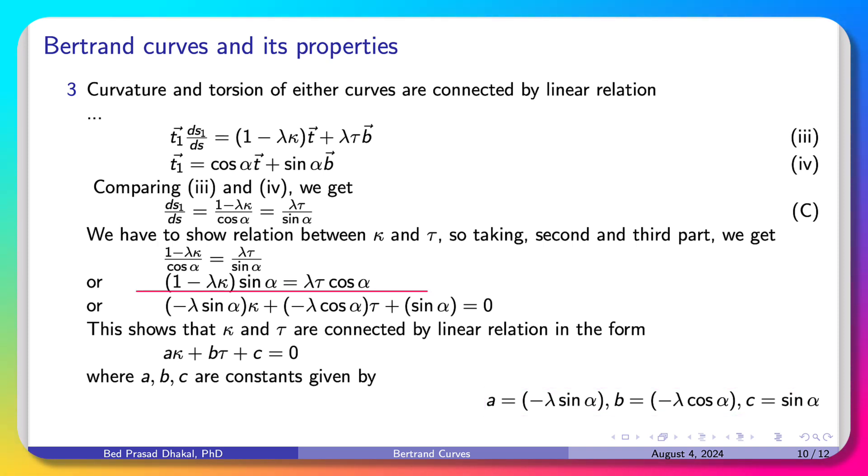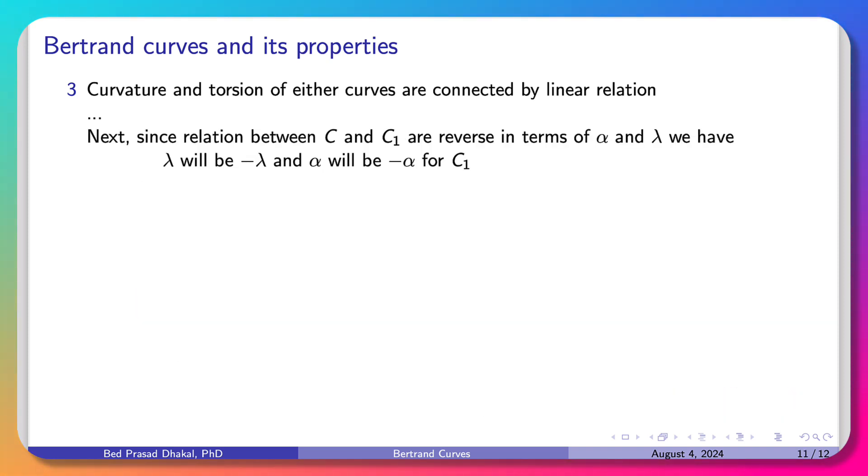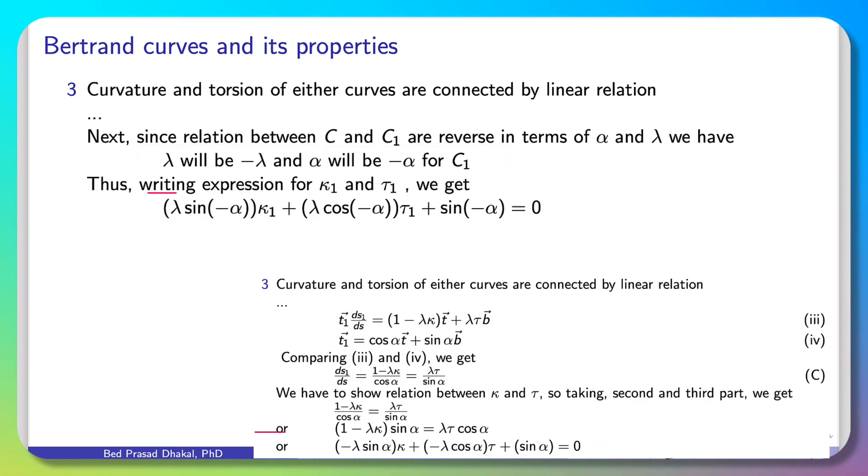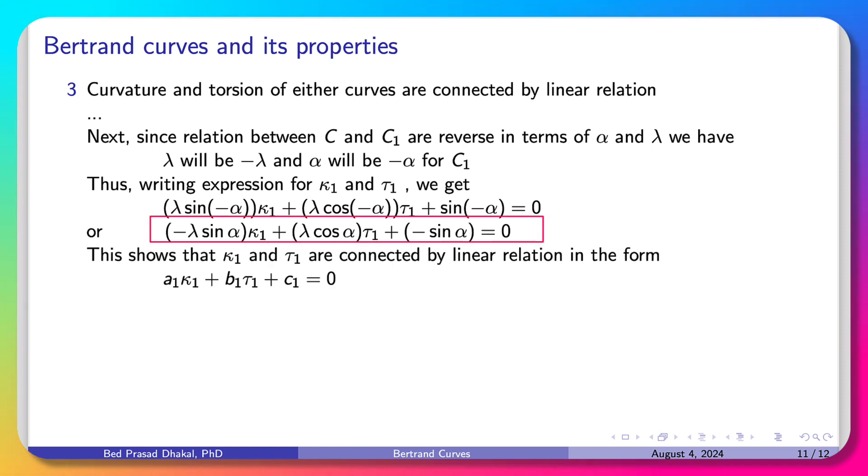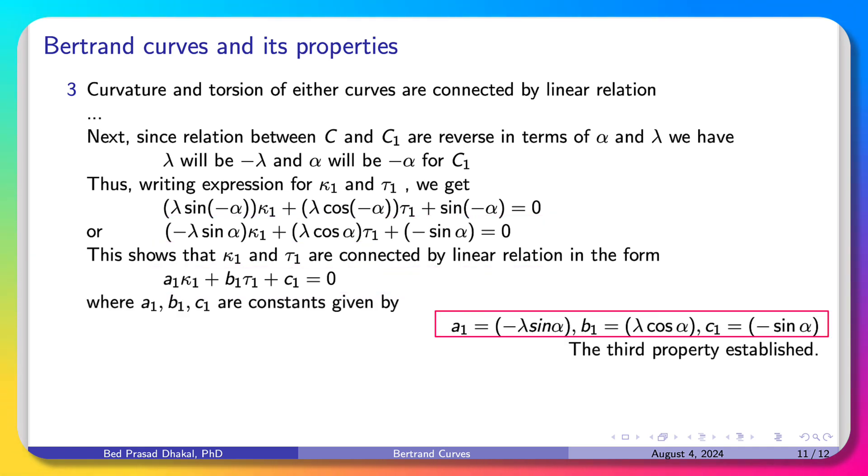This expression also holds for curve C1. To show the relation between C and C1, the relationship between these curves is reversed in terms of α and λ. So for C1 to C representation, α will be minus α and λ will be minus α for C1. Thus, when we write our expressions that we wrote before, they will be in this form, where we replace λ with minus λ and α with minus α. When simplified, it gives this form. For C1 also, we showed a1 times κ1 plus b1 times τ1 plus c1 equals 0, where a1 is minus λ sin α, b1 is λ cos α, and c1 is minus sin α. Similarly, the curvature and torsion κ1 and τ1 are also linearly expressed.